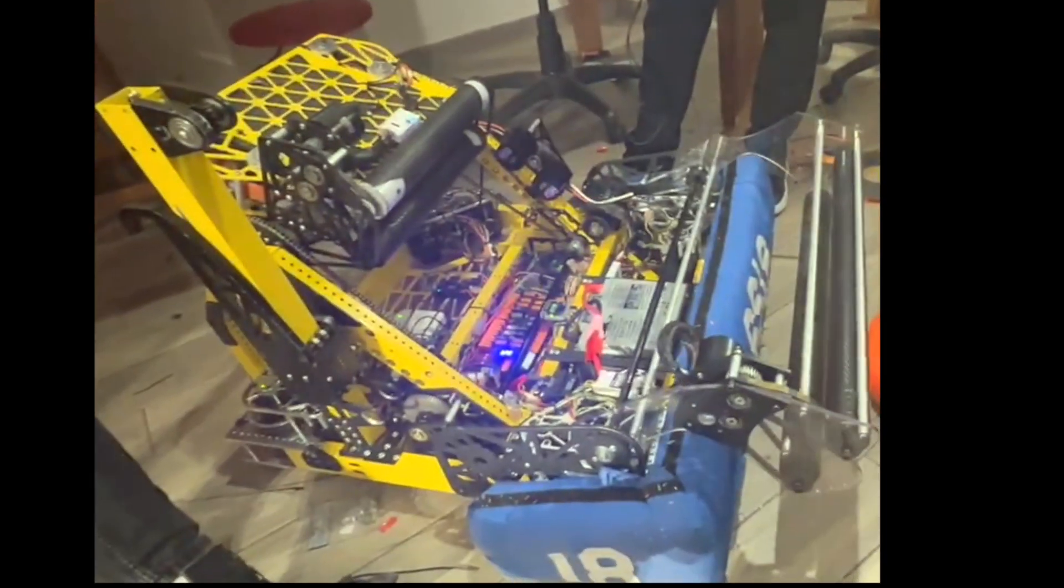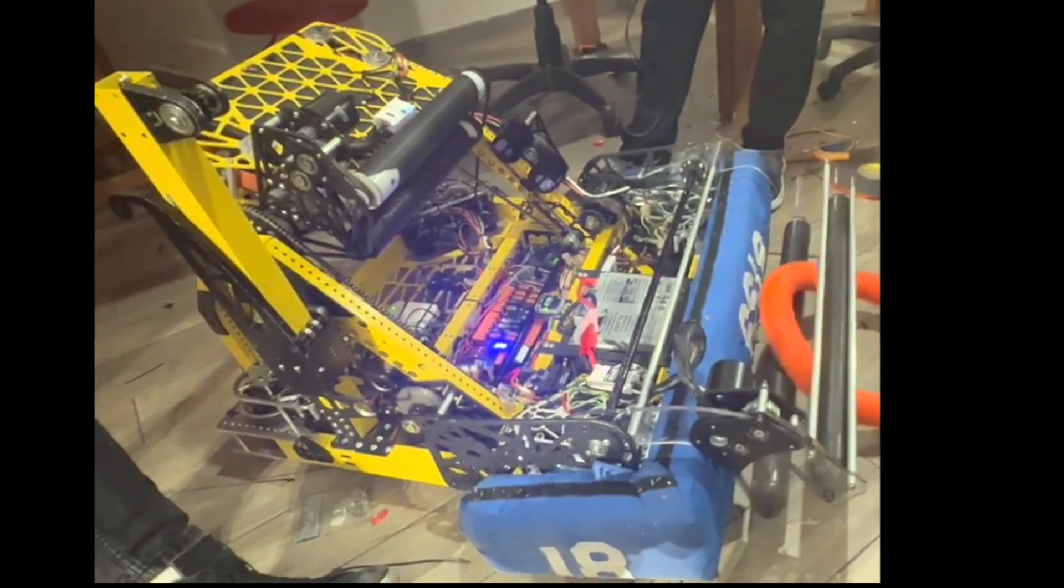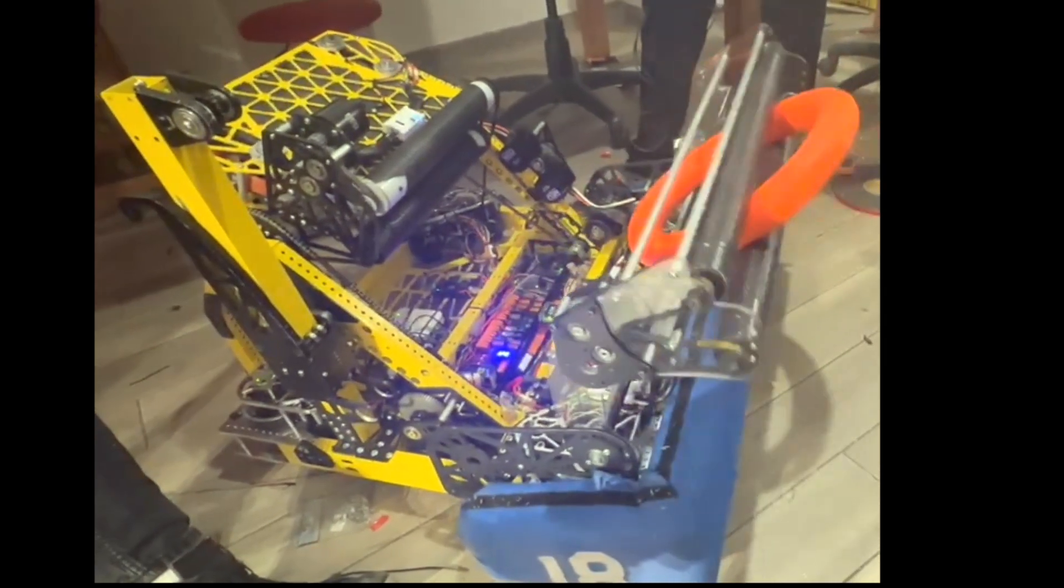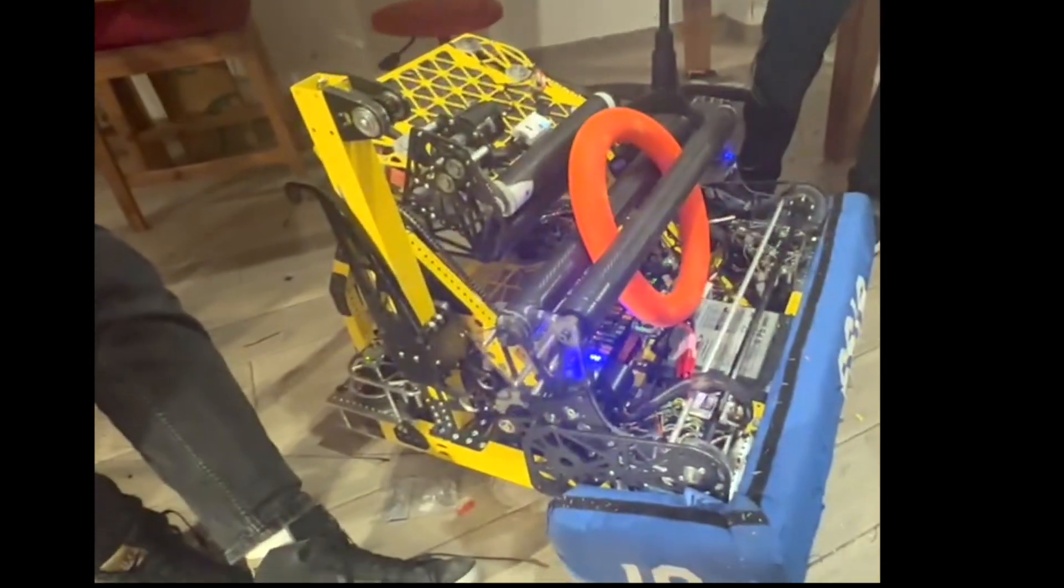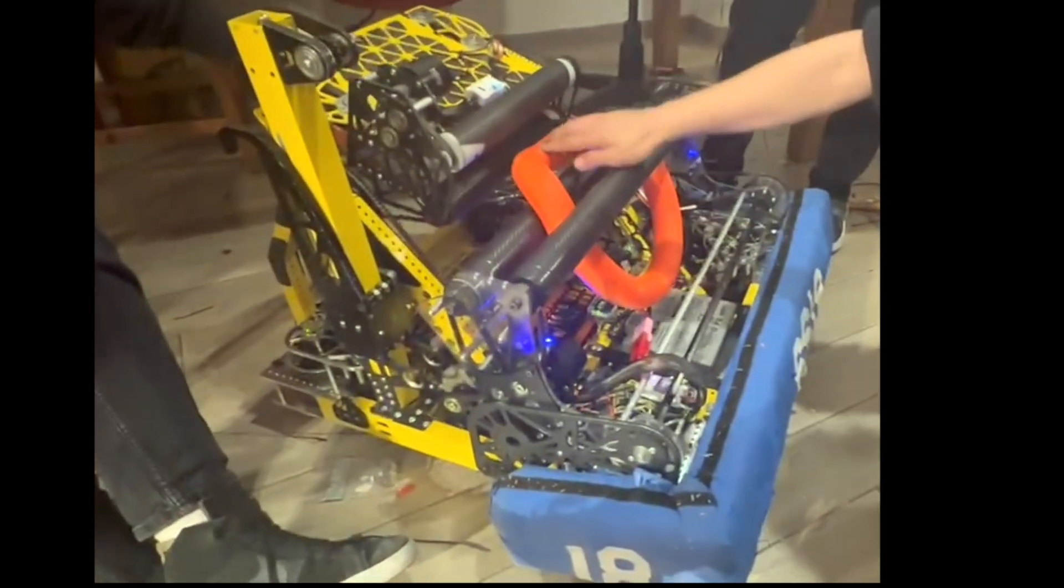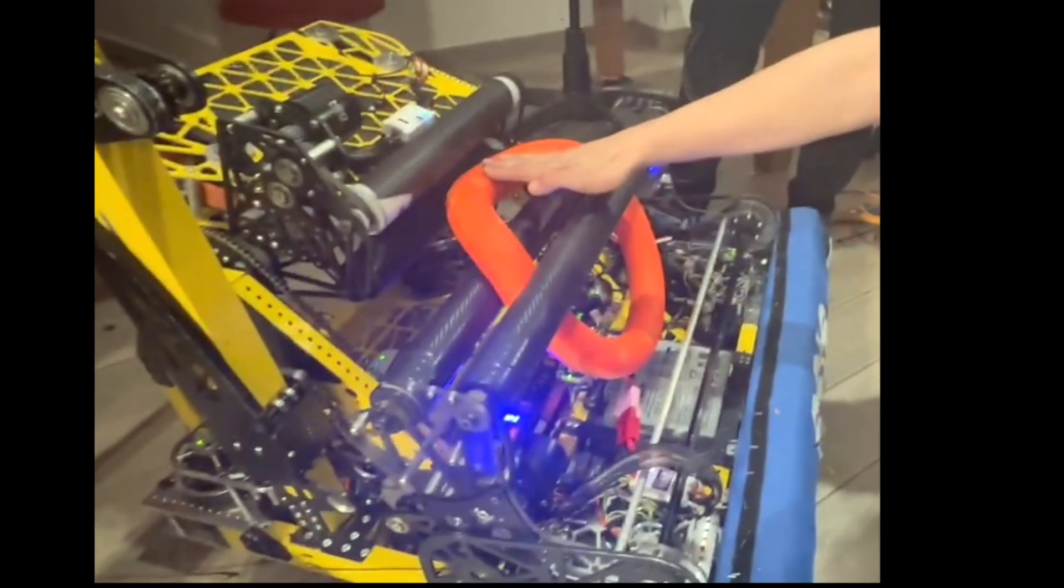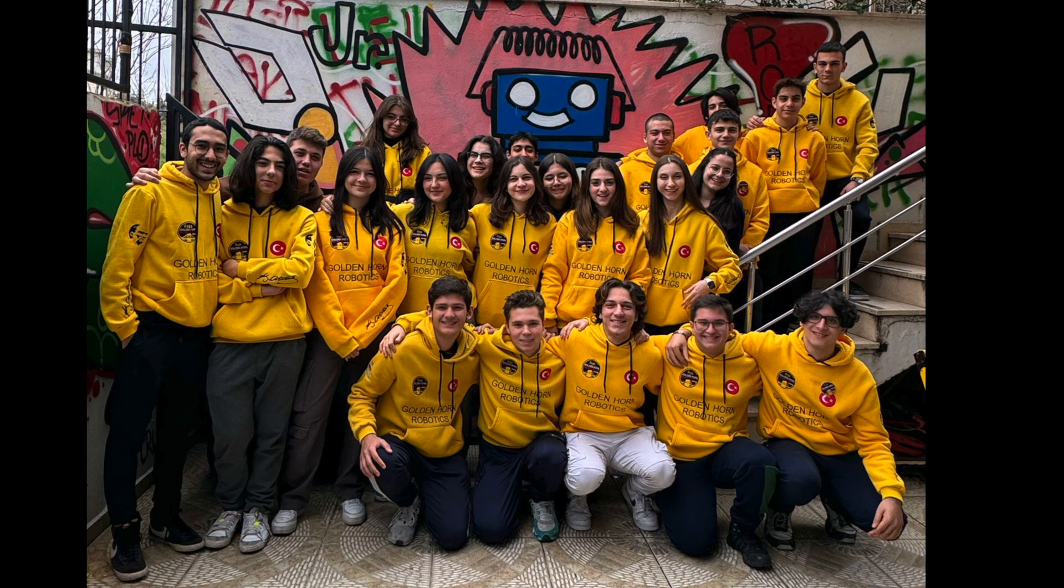Initially, we tried to fix the problem without a complete redesign by removing the piece that bent the node. This made feeding inconsistent, sometimes even dropping the node into the robot. We were left with no option but a complete redesign.